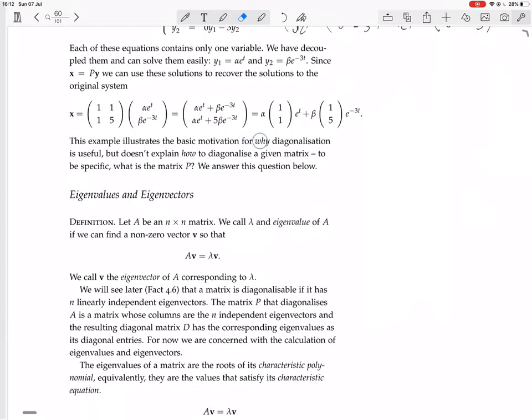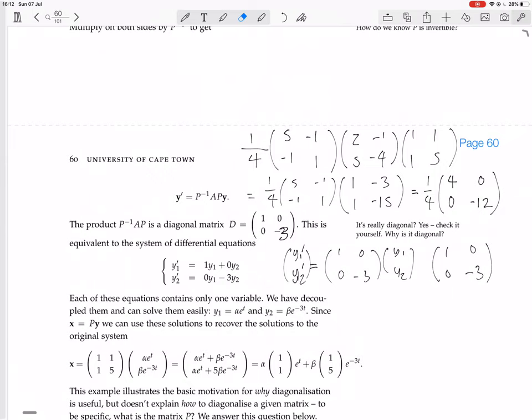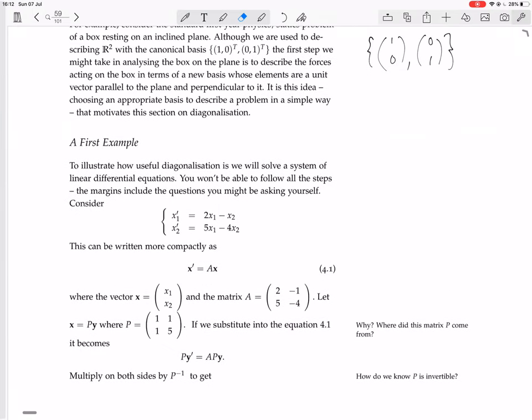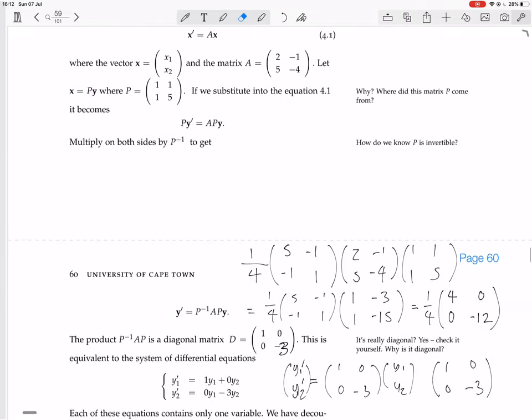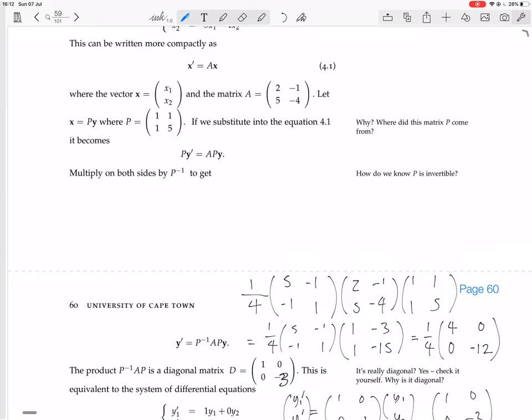Well, this example illustrates the basic motivation for why diagonalization is useful, but let's explain how to diagonalize a given matrix. So this thing was diagonalization. We took a matrix A, this matrix A right here, which wasn't diagonal. And we sort of made it diagonal. In the sense that we wrote it in the form diagonal matrix equals P inverse AP. That's what diagonalizing means, what making A diagonal is. And actually what it is, is this P is a change of basis. That's why there was this whole thing in the beginning about change of basis.